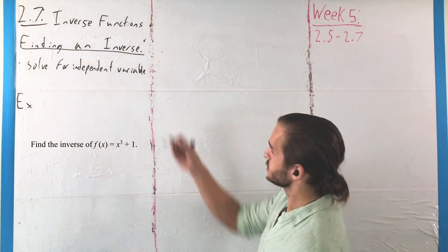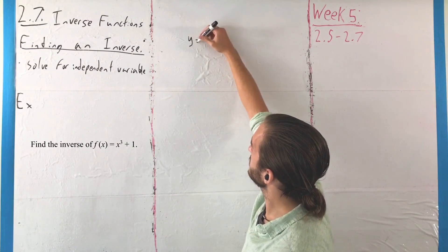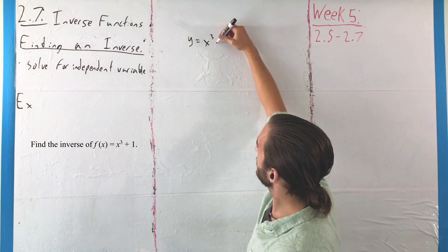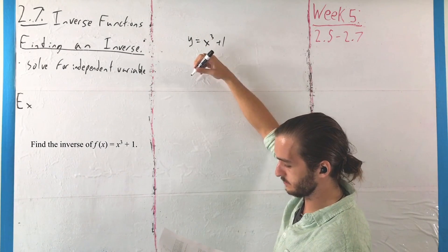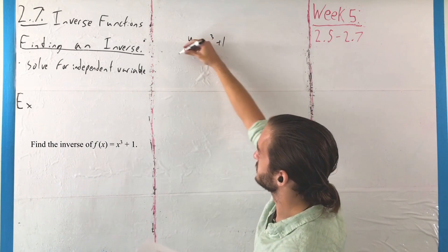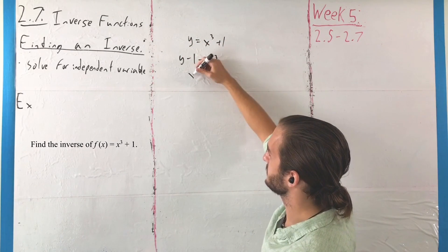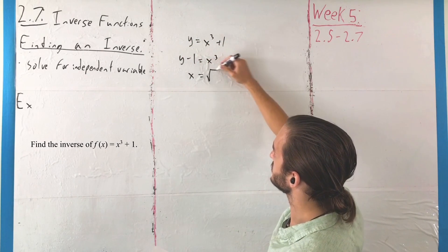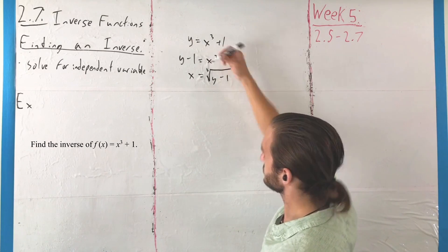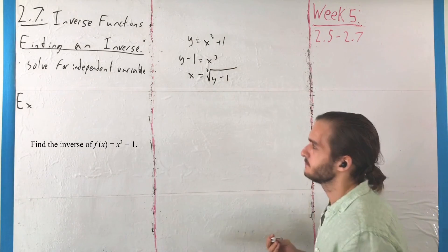So we have that function there. We're going to say y is equal to x cubed plus 1, and then we're just going to solve for x. Subtract 1, y minus 1 equals x cubed, and then I'm going to swap the sides. x is equal to the cube root of y minus 1.